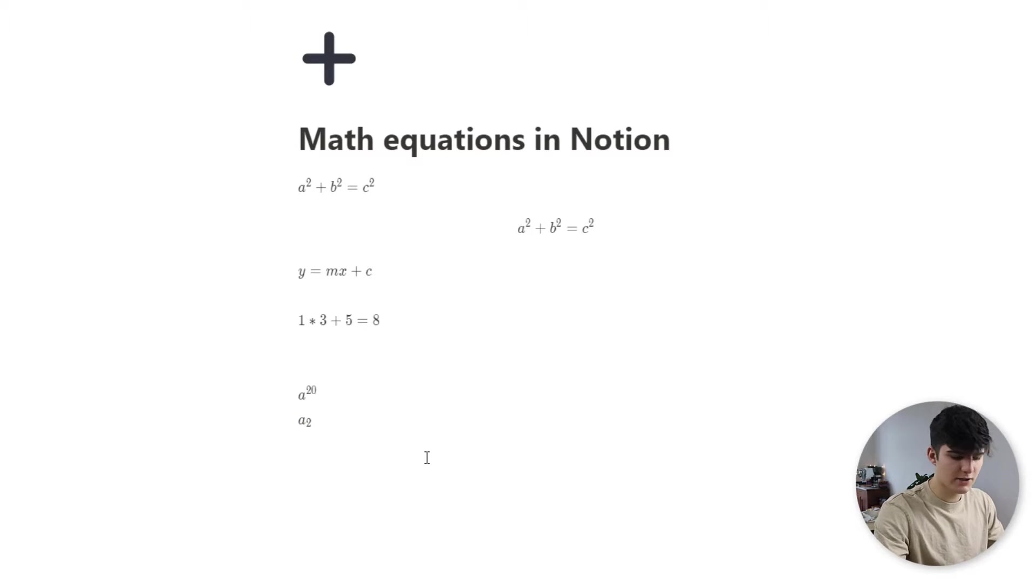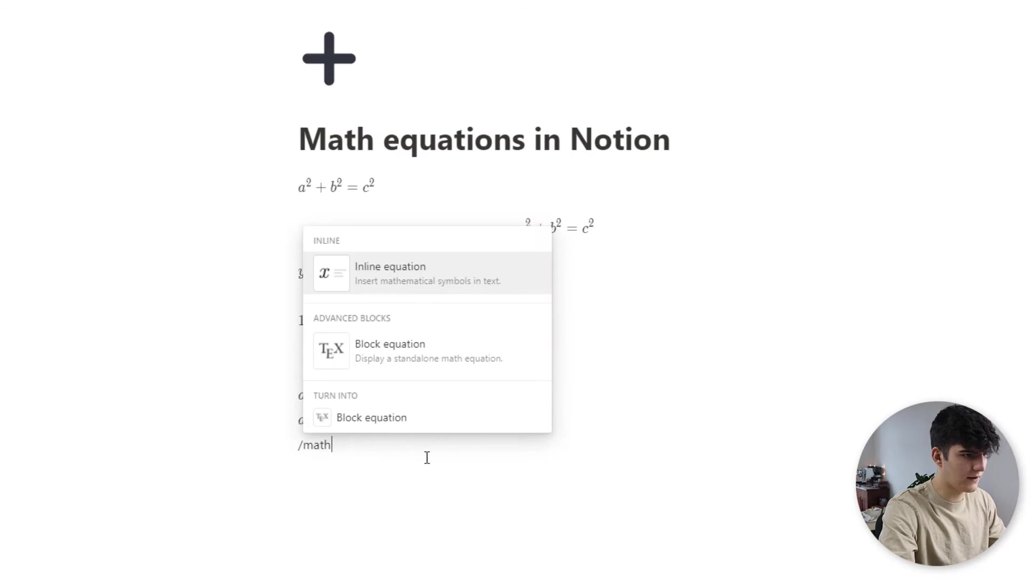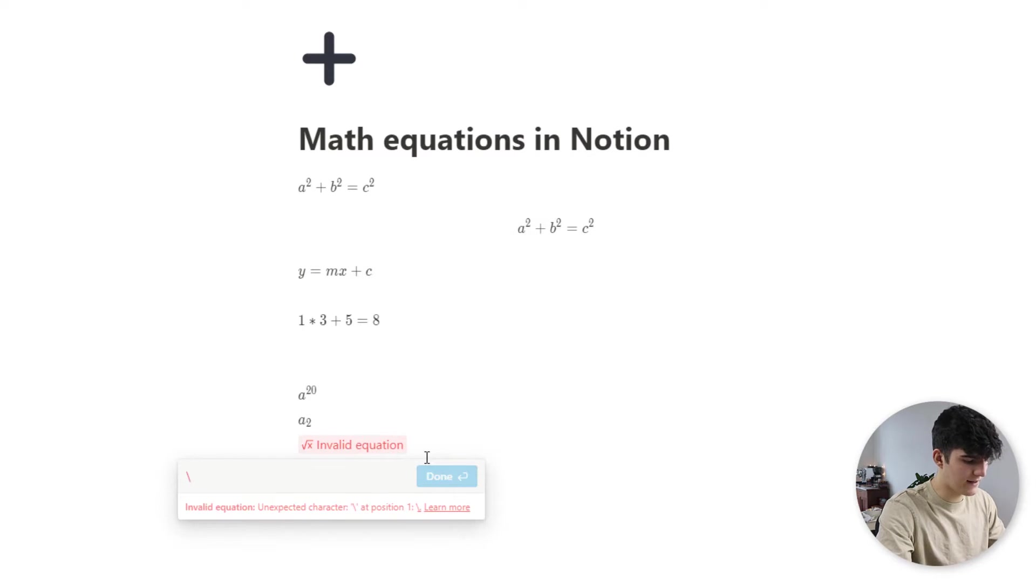You could also add fractions. So you can do this using the backslash frac. And then in curly braces, you first enter in the part that sits above and then what is below the line. So let's say we want to enter in one half. So we do it like this, one, and then we enter in a two and click on done. And you see, this is how it would look like in Notion.